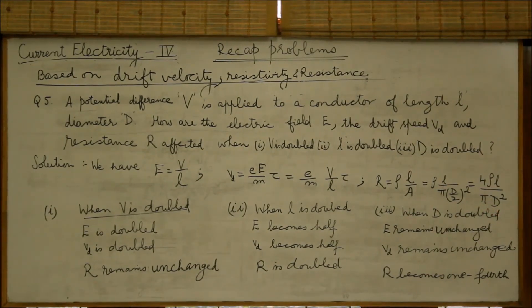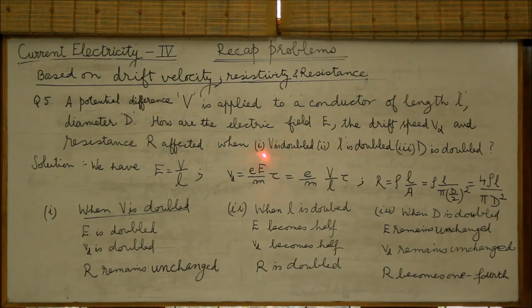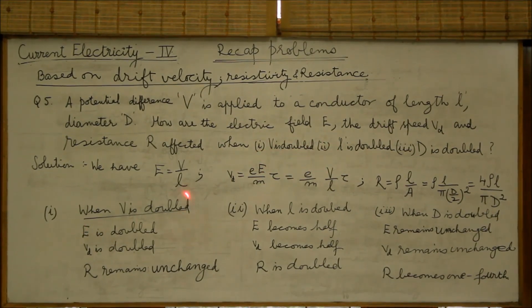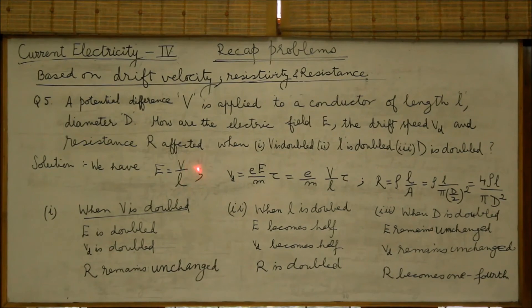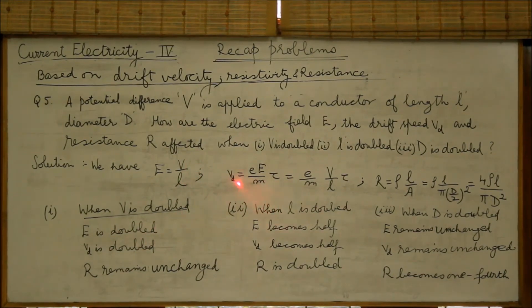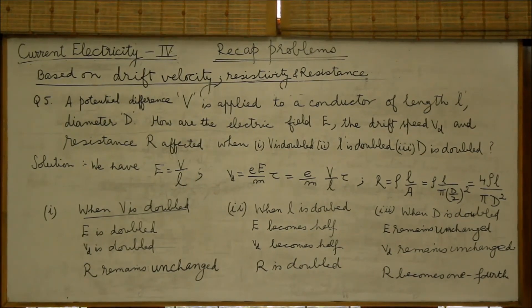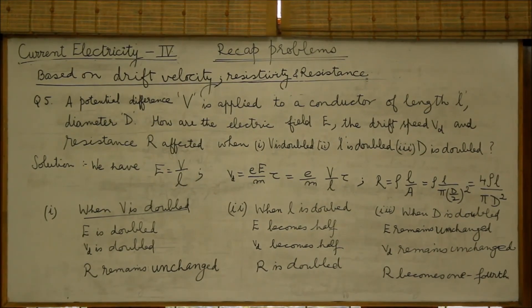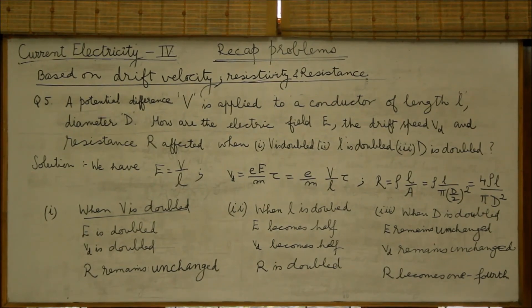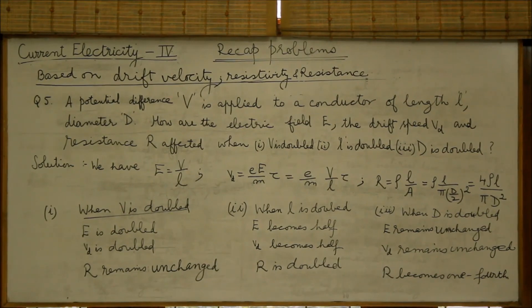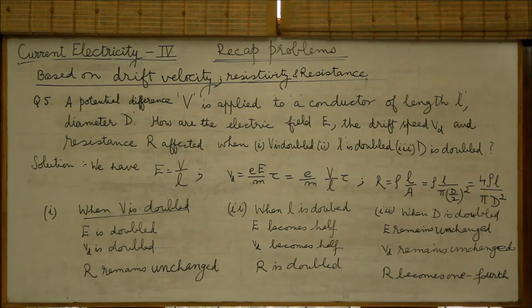Now, let's take the three cases one by one. First case, V is doubled. When V is doubled, E according to the relation will also be doubled. The drift speed will again be doubled. Whereas R, the resistance, is not affected by the change in potential difference. This we know from our knowledge in Ohm's law. V over I, that is R, remains unchanged for various values of the potential difference and current.